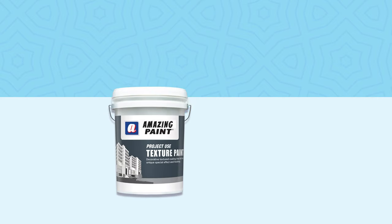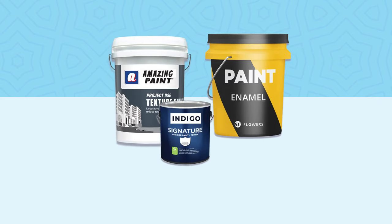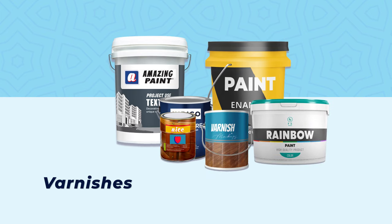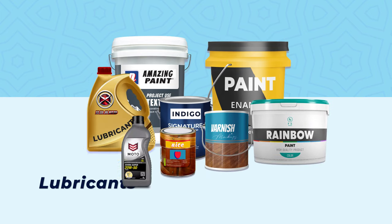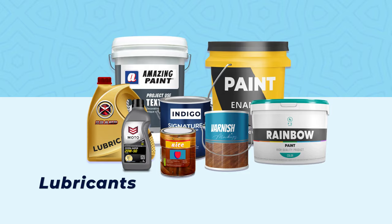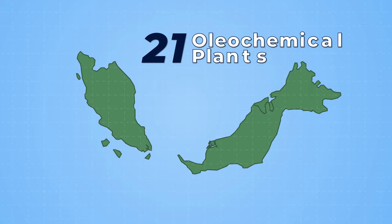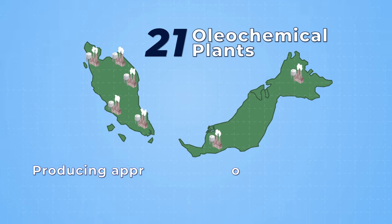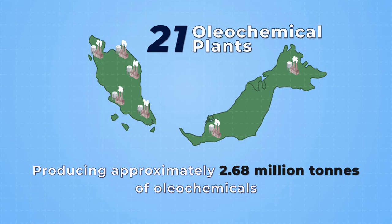Apart from that, oleochemicals are also important in the production of paints, varnishes and lubricants. Currently, there are more than 21 oleochemical plants in Malaysia, producing approximately 2.68 million tonnes of oleochemicals.